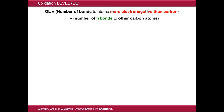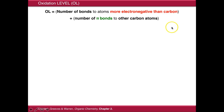What we use instead is a slightly simplified system called oxidation level, which is for measuring the level of oxidation at carbon atoms. We work out the oxidation level of a carbon atom by counting the number of bonds from that carbon atom to atoms which are more electronegative than carbon, plus the number of pi bonds to other carbon atoms.